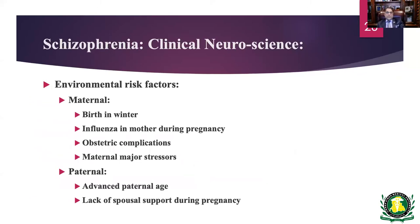Risk factors for schizophrenia: births in winter months have higher risk. If the mother suffered from influenza during pregnancy, or there were obstetric complications or major stresses on the mother, there is a higher incidence of the child developing schizophrenia. On the paternal side, advanced paternal age and lack of spousal support — which contributes to maternal stress — also contribute.